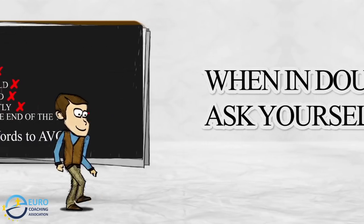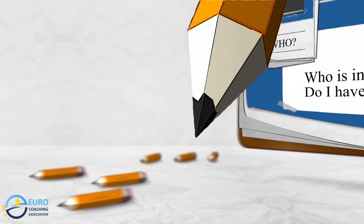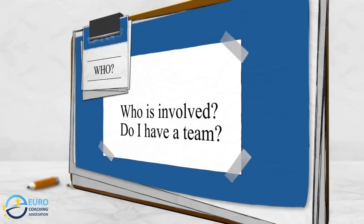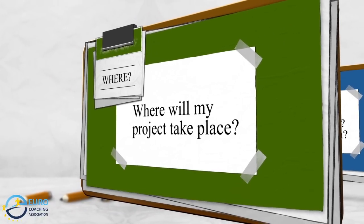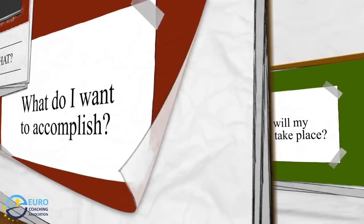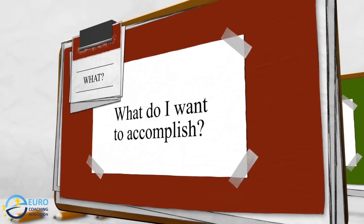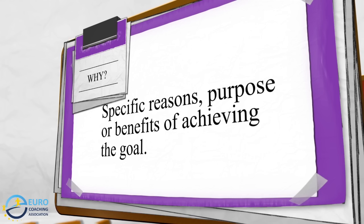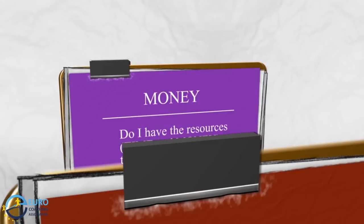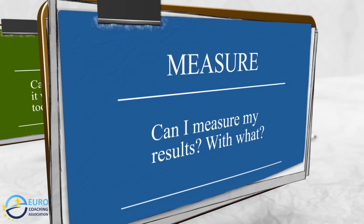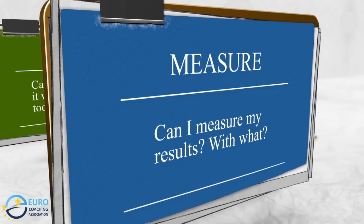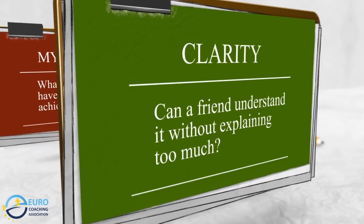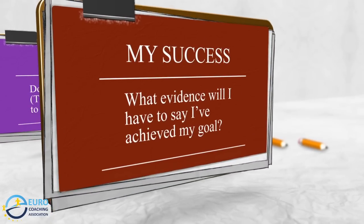When in doubt, these questions will help you write a SMARTER goal: Who is involved in my project? Do I have a team that supports me until the end of the project? Where will my project take place? Why am I doing this? What should I accomplish? What are my specific reasons, purpose, or benefits of achieving the goal? Can I measure my results? If yes, with what? Is it clear? Can a friend understand it? What evidence will I have to say I've achieved my goal?